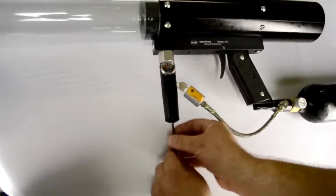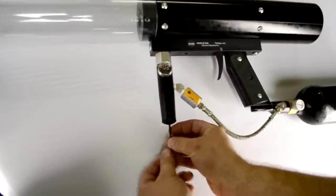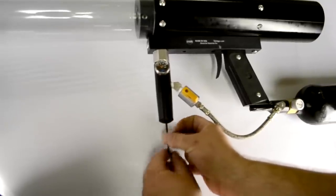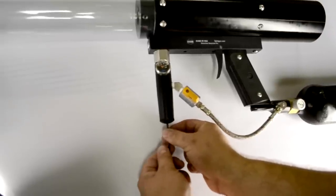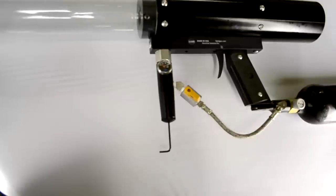Now using the same eighth inch allen key, we'll turn clockwise until we feel a little bit of tension on the screw and we hear gas coming through the reg. Then we'll immediately stop and let the needle catch up.